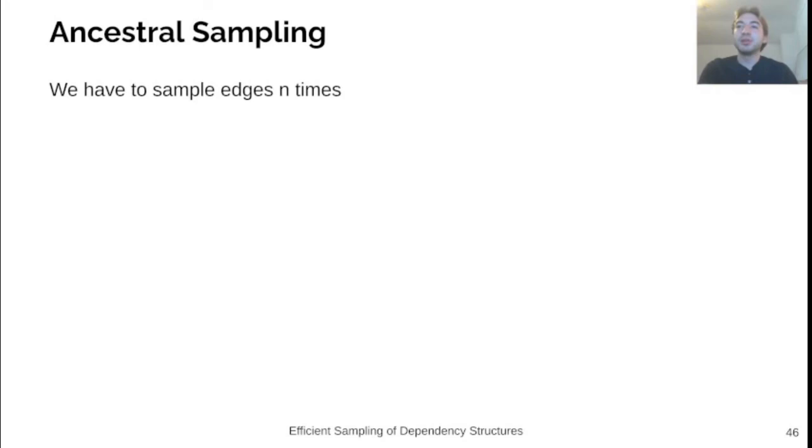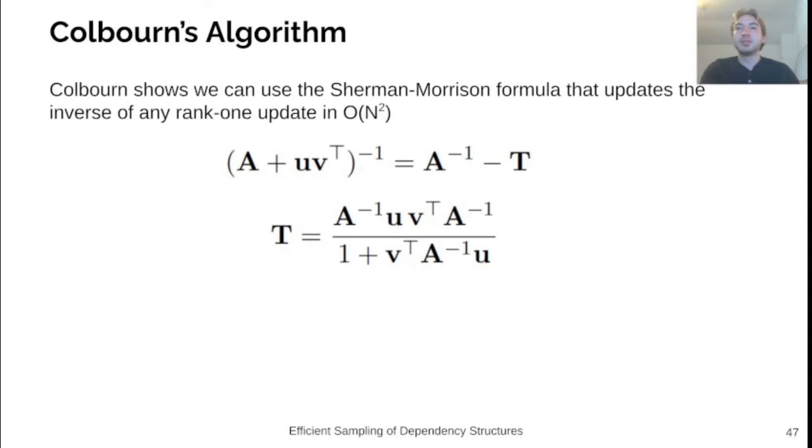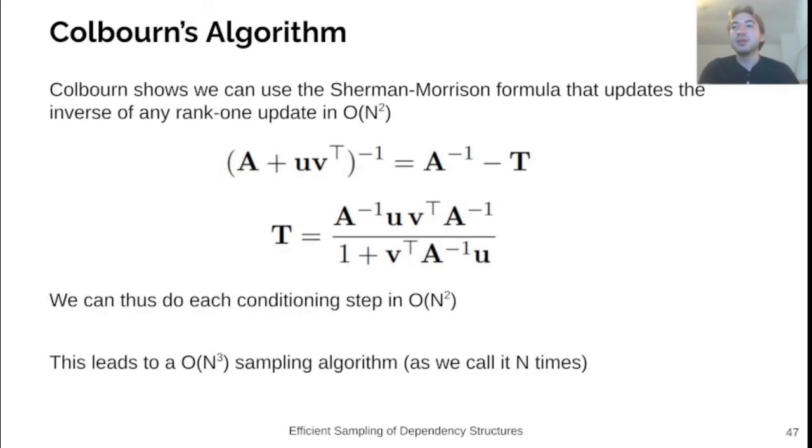We have to perform n edge sampling operations. Naively, recomputing the marginals at each time step requires a matrix inverse to be performed n times. This leads to a total runtime of O(n^4). Colburn's algorithm improves on this by utilizing the Sherman-Morrison formula, which is a linear algebra trick used in many algorithms, that can update the inverse matrix of any rank 1 update in quadratic time. It turns out that we can condition the graph and its Laplacian matrix using a column replacement, which is a rank 1 update, and so we can do each sampling step in n squared time, leading to a cubic time sampling algorithm.